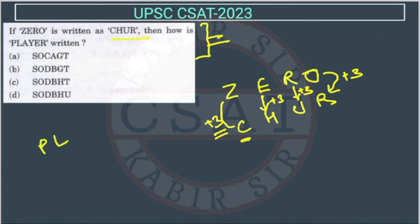So we will see PLAYER. Now they have given P, L, A, Y, E, R. Every letter will move 3 steps ahead.